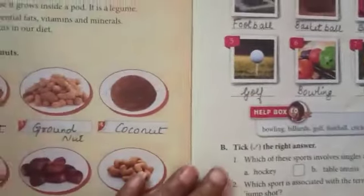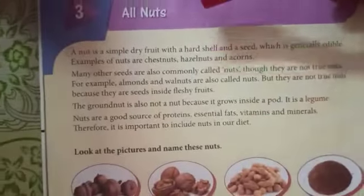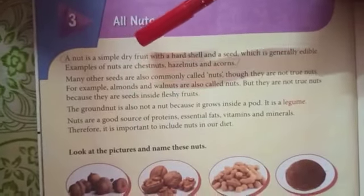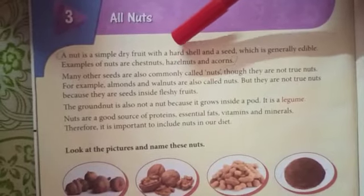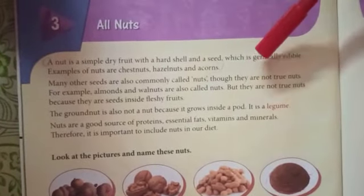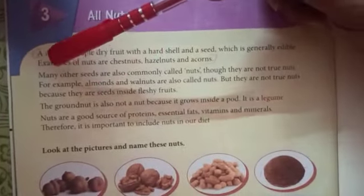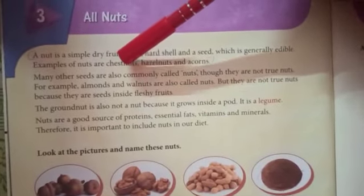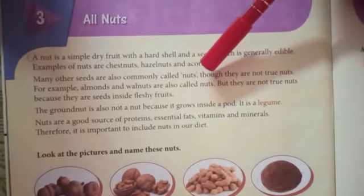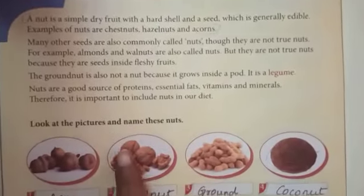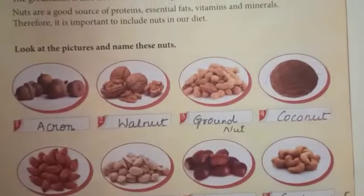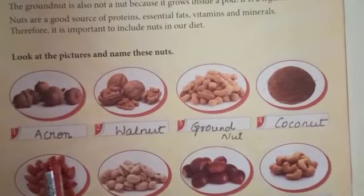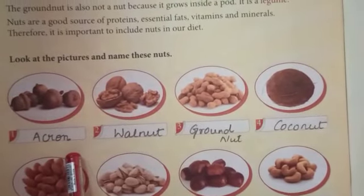Come to lesson number 3: All Nuts. A nut is a simple dry fruit with a hard shell and a seed which is generally edible. For example, nuts are chestnuts, hazelnuts, and acorns. Now look at the pictures and name these nuts. First one: acorn — A-C-R-O-N.